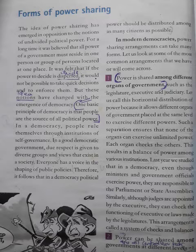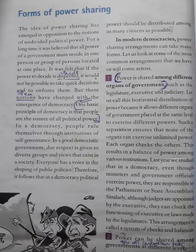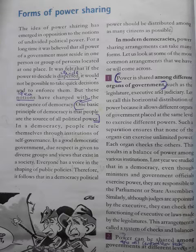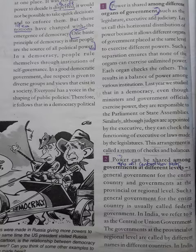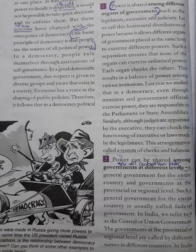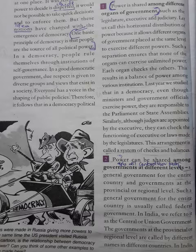Power is shared in four various forms. The first and most common form of power sharing is power shared among different organs of government. Do you remember what are the different organs of government? Kaun kaun se organ hoti hai ek government ke? That is legislature, executive, and judiciary.